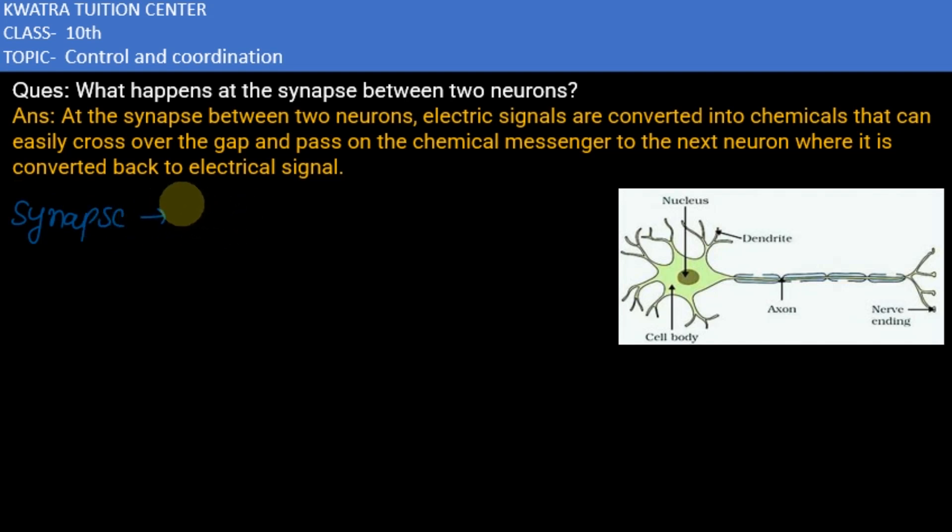The synapse is that junction region between two neurons. And synapse are of two types: pre-synaptic neuron and post-synaptic neuron.